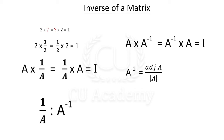A inverse is equal to 1 divided by determinant A, into the adjoint. We need to find the adjoint. That is: A inverse is equal to 1 by determinant A into adjoint A.